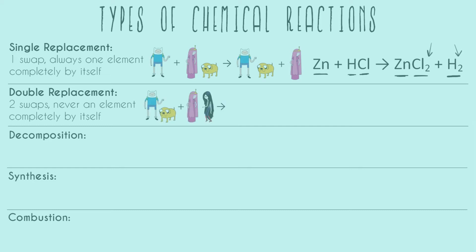In our cartoon analogy, we start off with Finn and Jake, and then we have Princess Bubblegum with Marceline. No one is by itself ever in double replacement. At the end, everything has swapped — any pair that was together is not anymore. Now Finn is with Marceline, and Princess Bubblegum is with Jake.